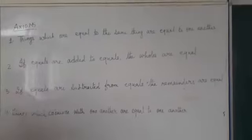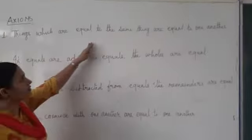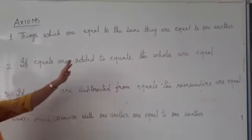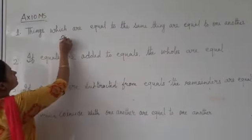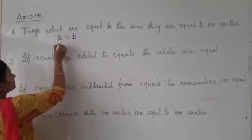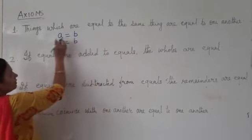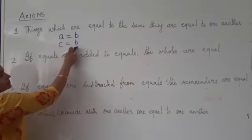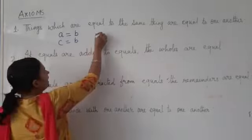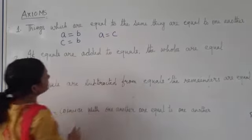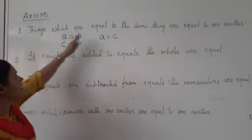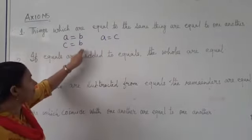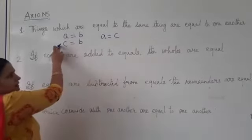Now, first axiom is things which are equal to the same thing are equal to one another. Now what is this? Let's describe. A is equal to B and C is equal to B. If A is equal to B, C is also equal to B, then A is equal to C. This is what is being said through this statement that things which are equal to the same thing are equal to one another.